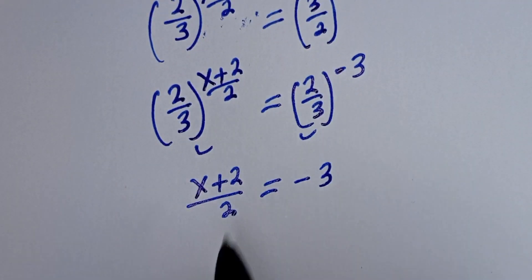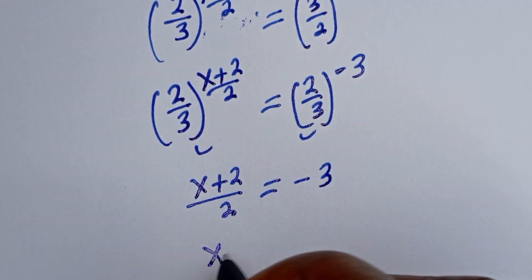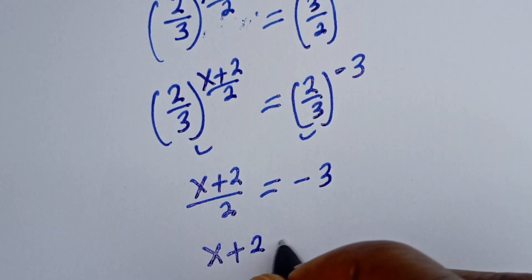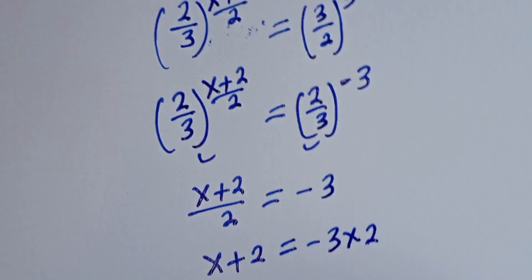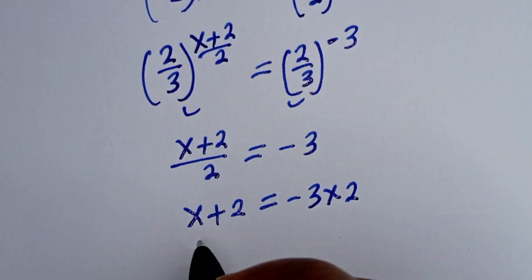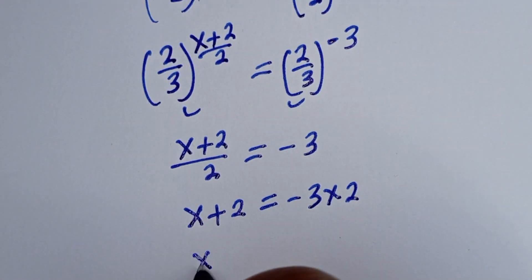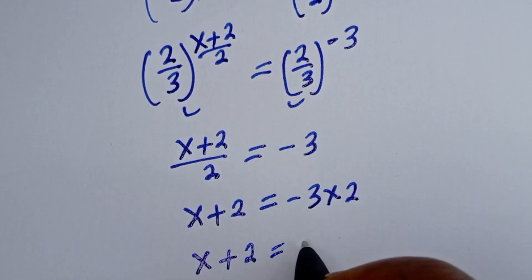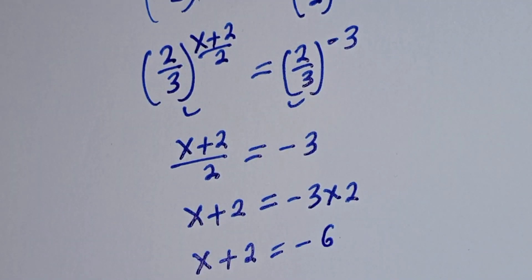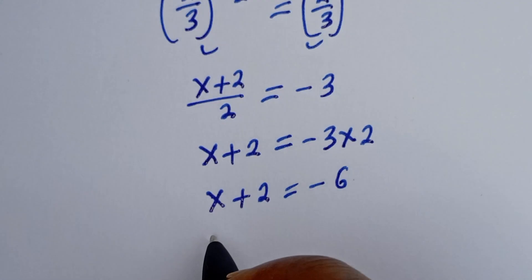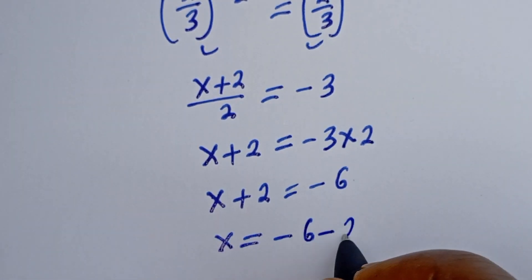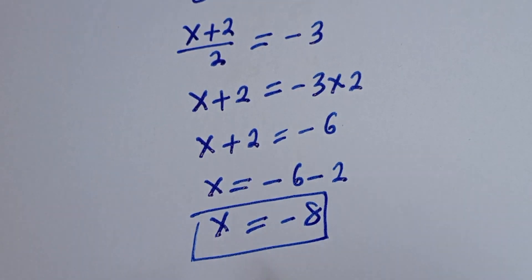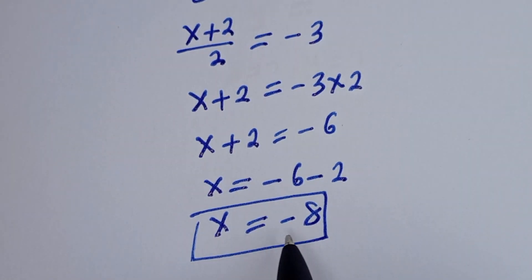Let's cross-multiply from here: S plus 2 is equal to negative 3 multiplied by 2. Then S plus 2 is equal to negative 6. Then S is equal to negative 6 minus 2. S is equal to negative 8. And this is the final answer.